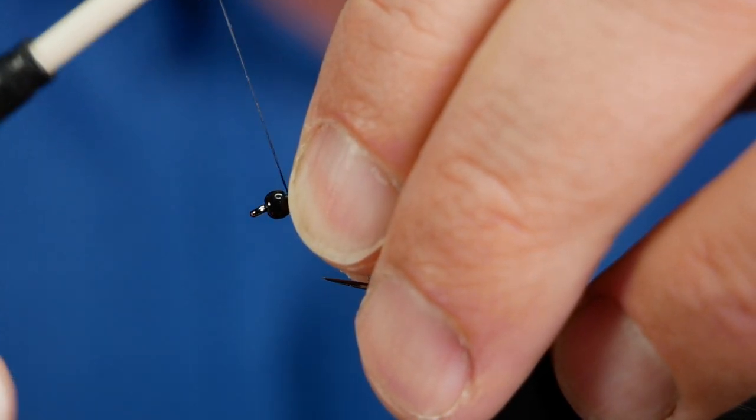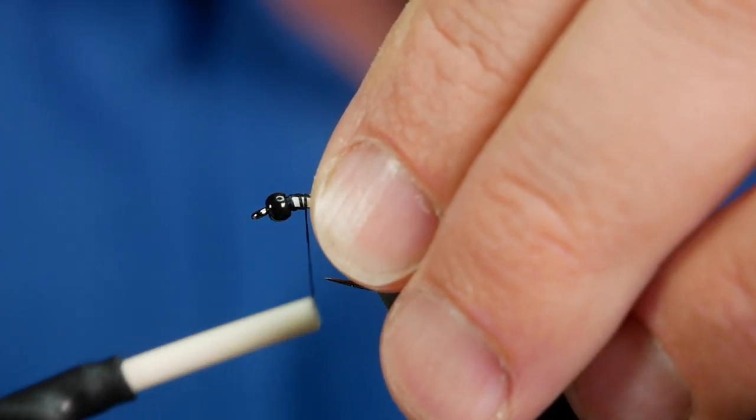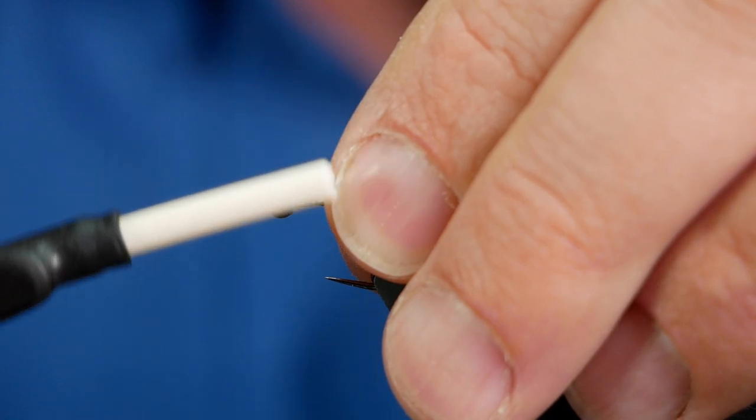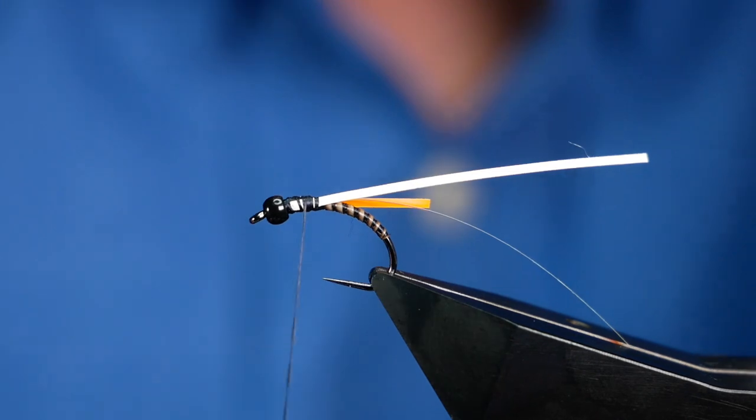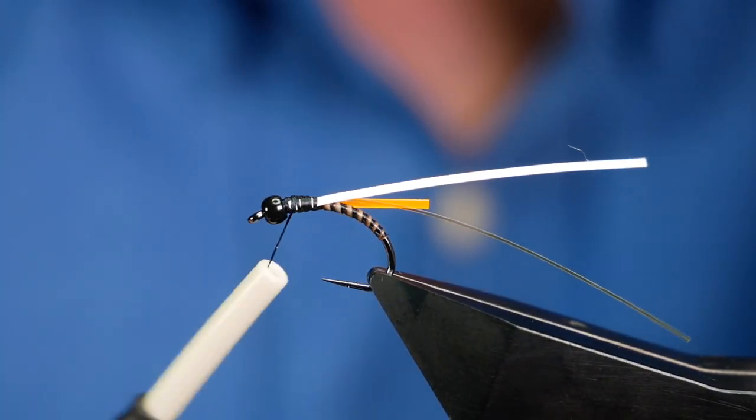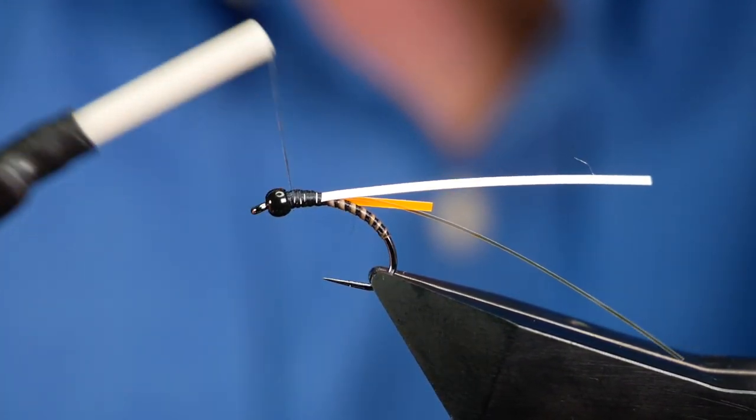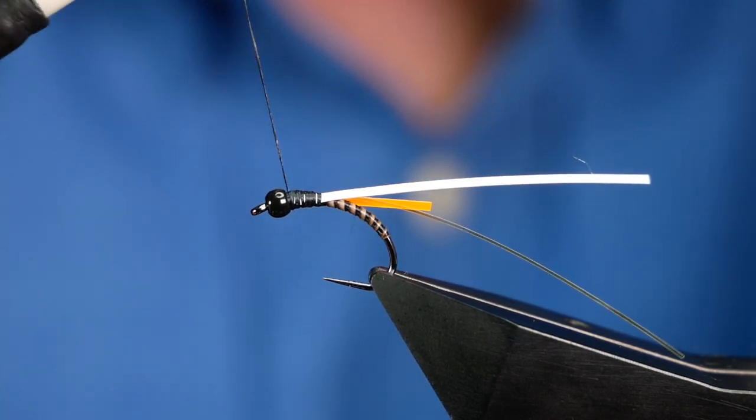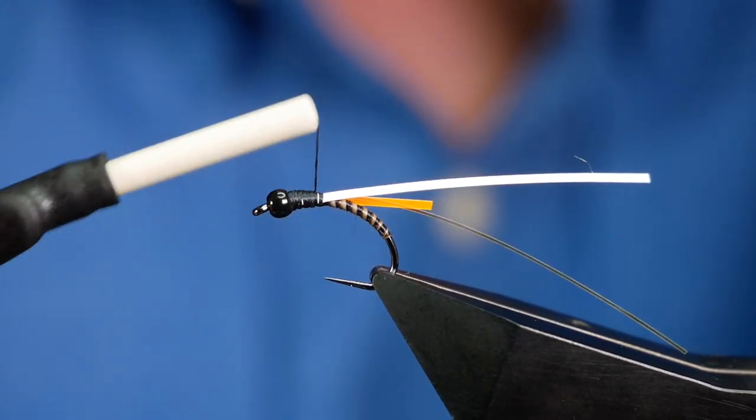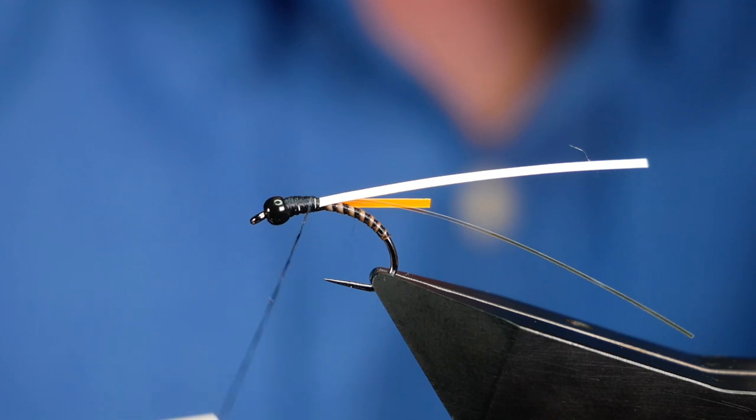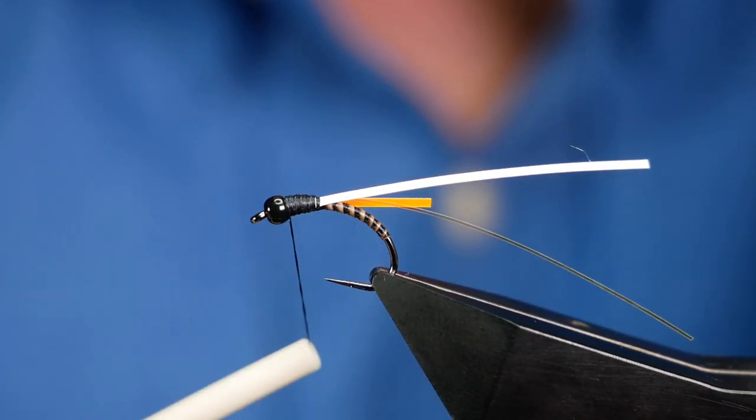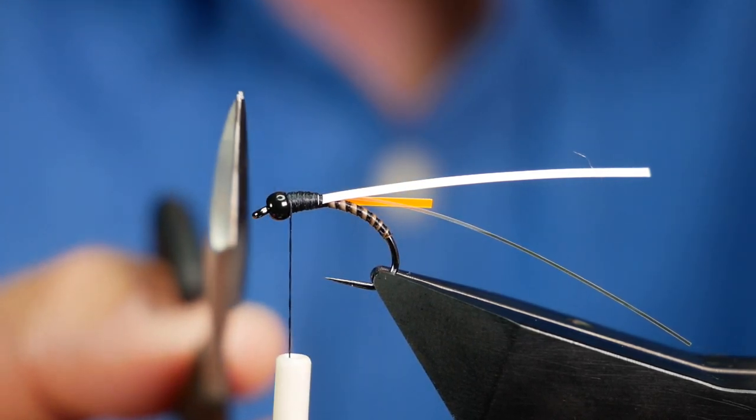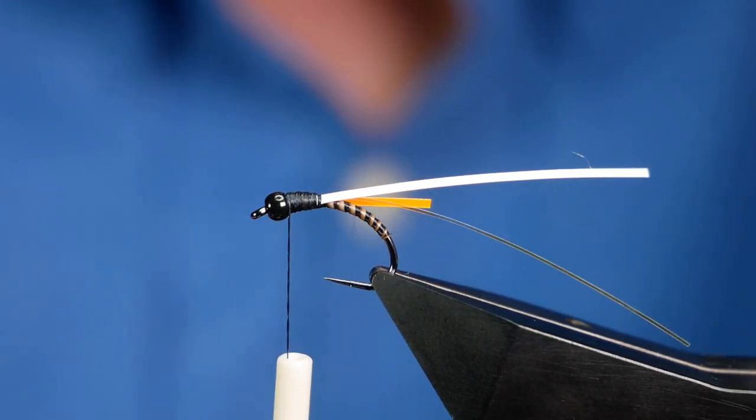Now the tying of this fly is fairly straightforward. If you take your time, it's easy enough to tie. But to get a really nice finish with it, it's the varnishing. That's always the key to these fast sinking buzzers. If you get the varnishing right, they look superb. So I don't want to have a huge, big, thick thorax and I certainly don't want it any bigger than my bead here.